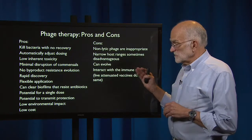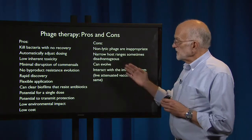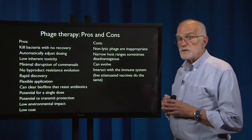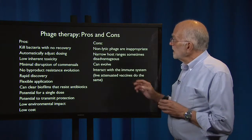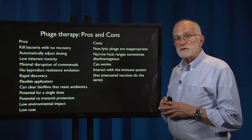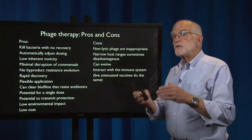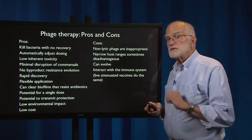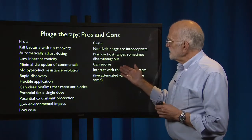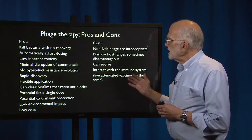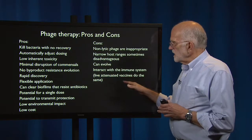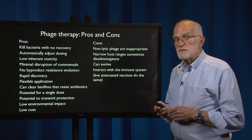However, there are some problems. Non-lytic phage are inappropriate and shouldn't be used. Their narrow host ranges can sometimes be disadvantageous — if you don't know precisely which bacterium you have, then the phage may not work. They can evolve and they can interact with our immune system, though live attenuated vaccines do the same.